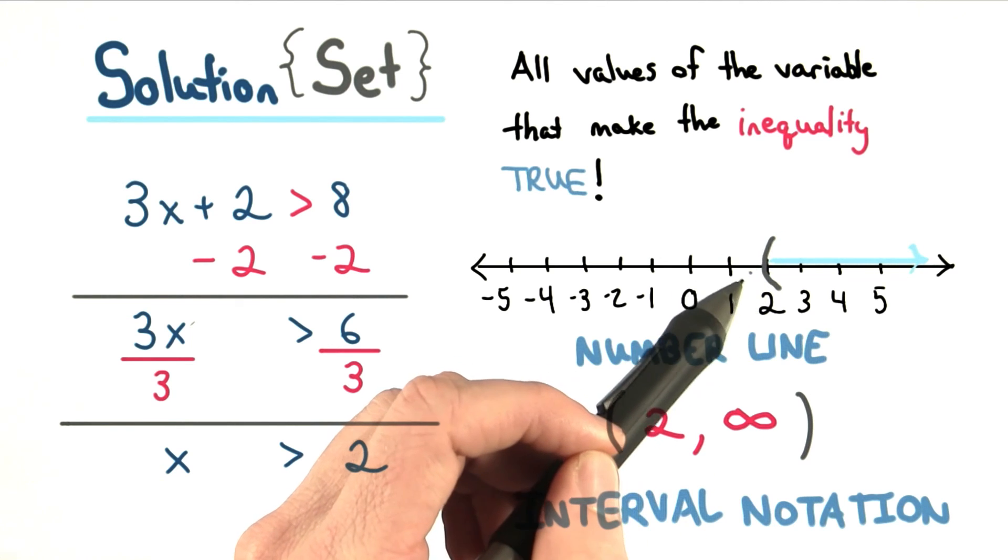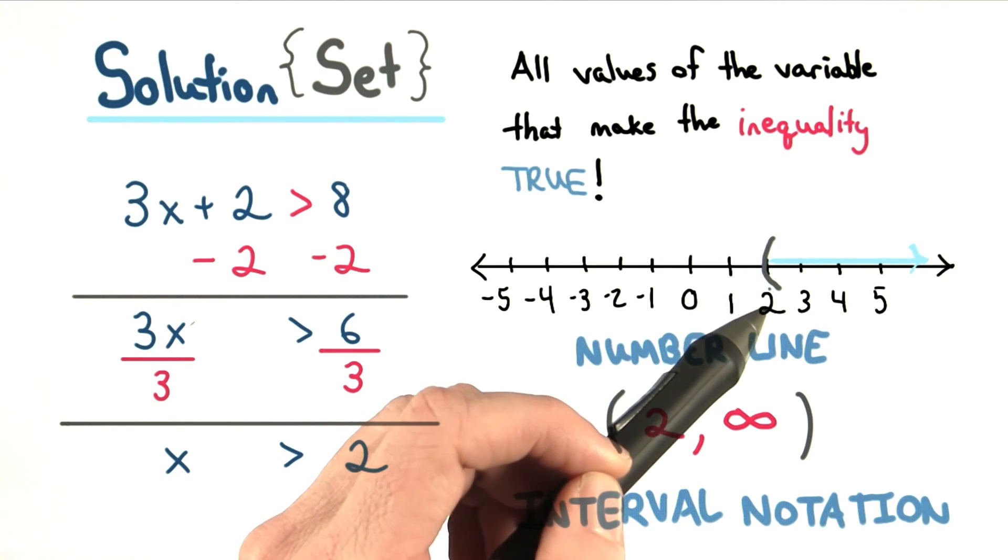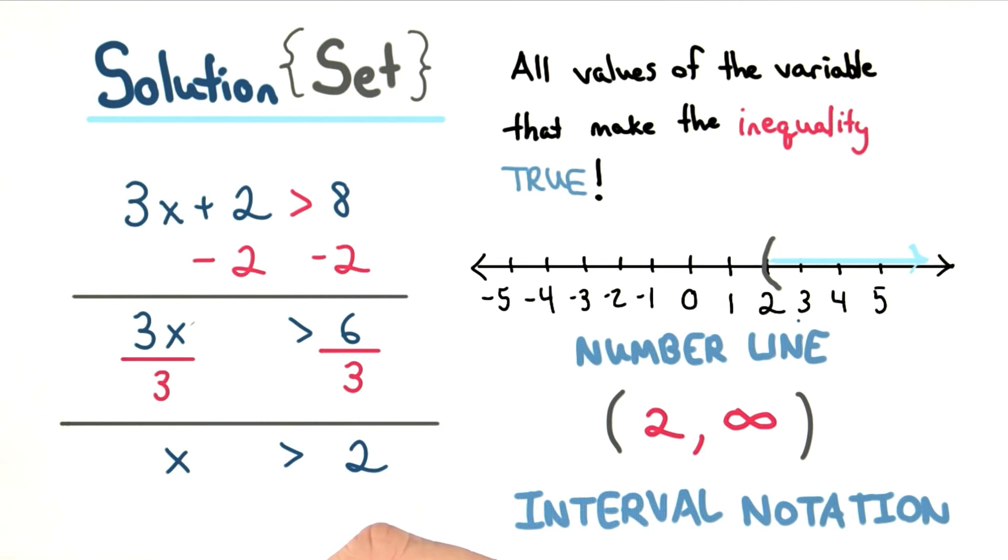You might be used to seeing an open circle at 2, which is correct. For this class though, we'll only use the parentheses when showing answers on the number line.